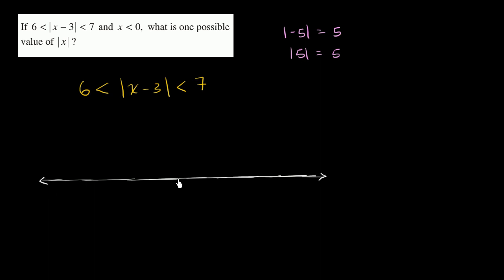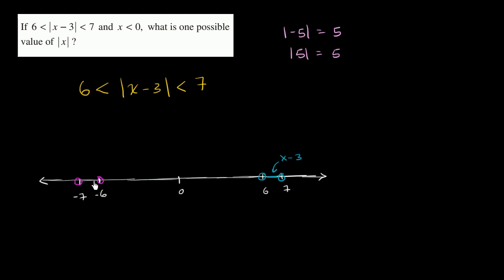So let's say this right over here is 0, this is positive 6, this is positive 7, this is negative 6, and this is negative 7. So if x minus 3 sits in the interval between 6 and 7 — not equaling those, because these are strict less-than signs — then the absolute value of x minus 3 will be between 6 and 7 away from 0. But x minus 3 could also be in the interval between negative 6 and negative 7.